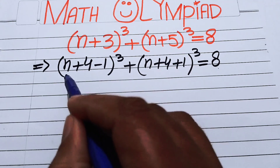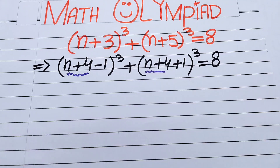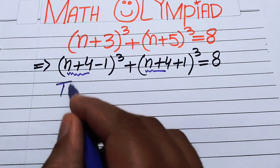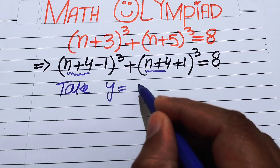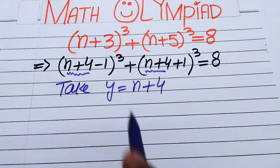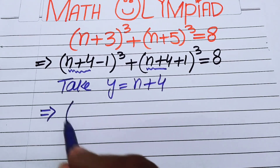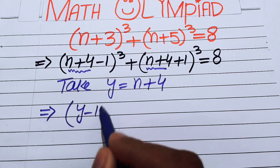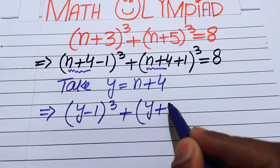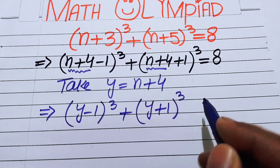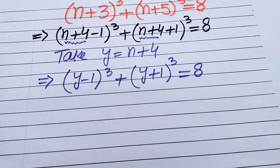Now we substitute y = n+4. Both (n+4) terms become y, so the expression takes the form (y−1)³ + (y+1)³ = 8.